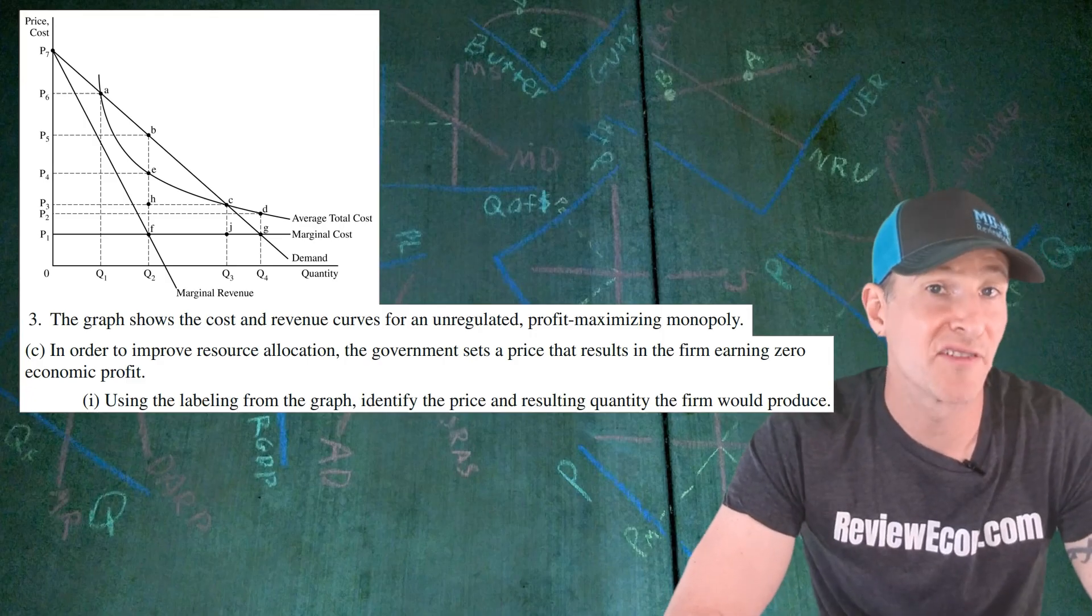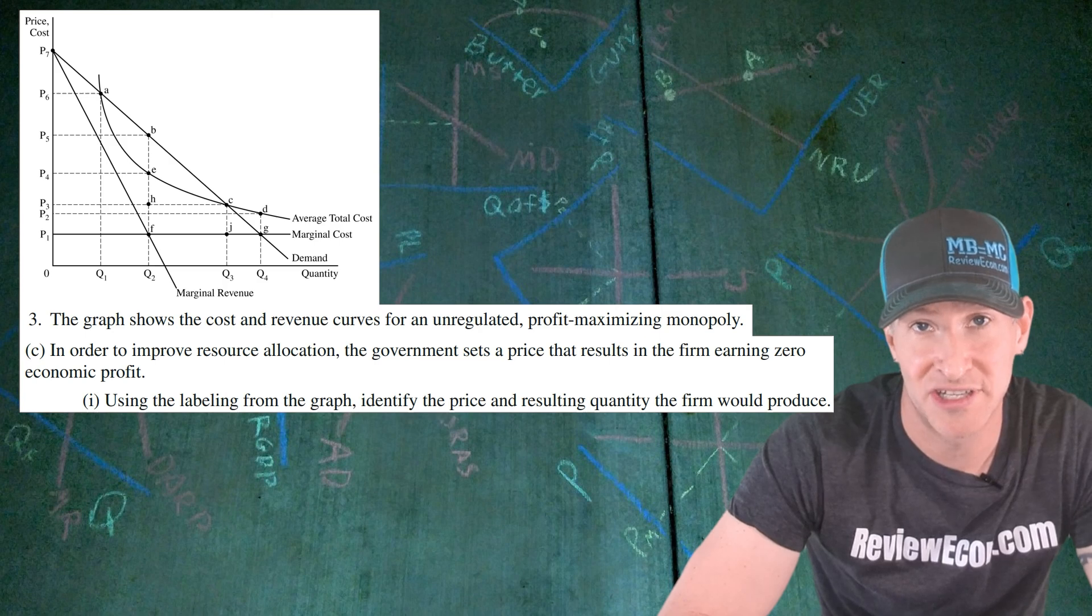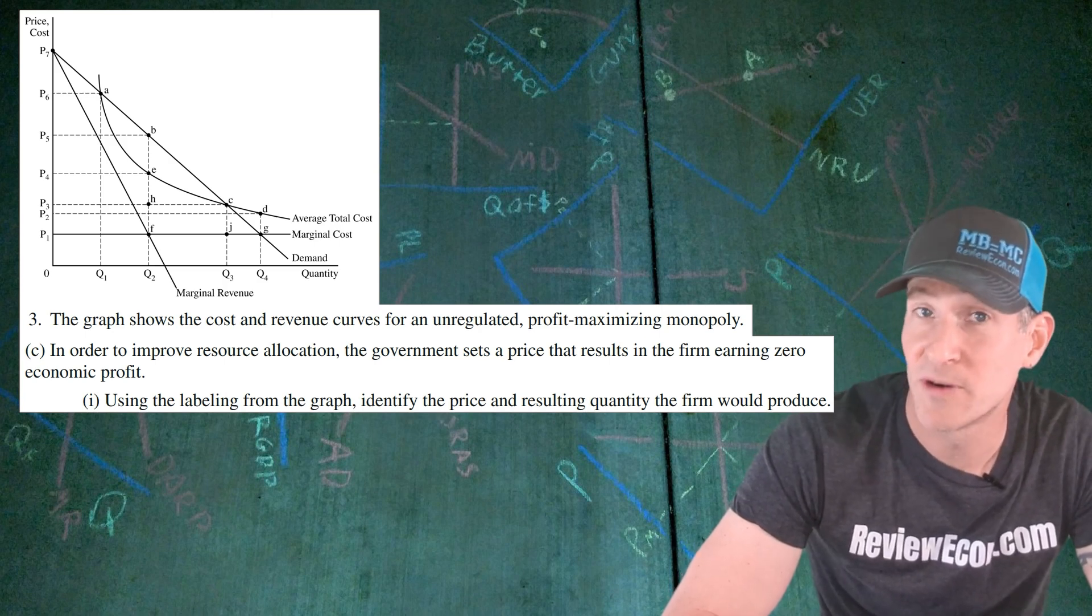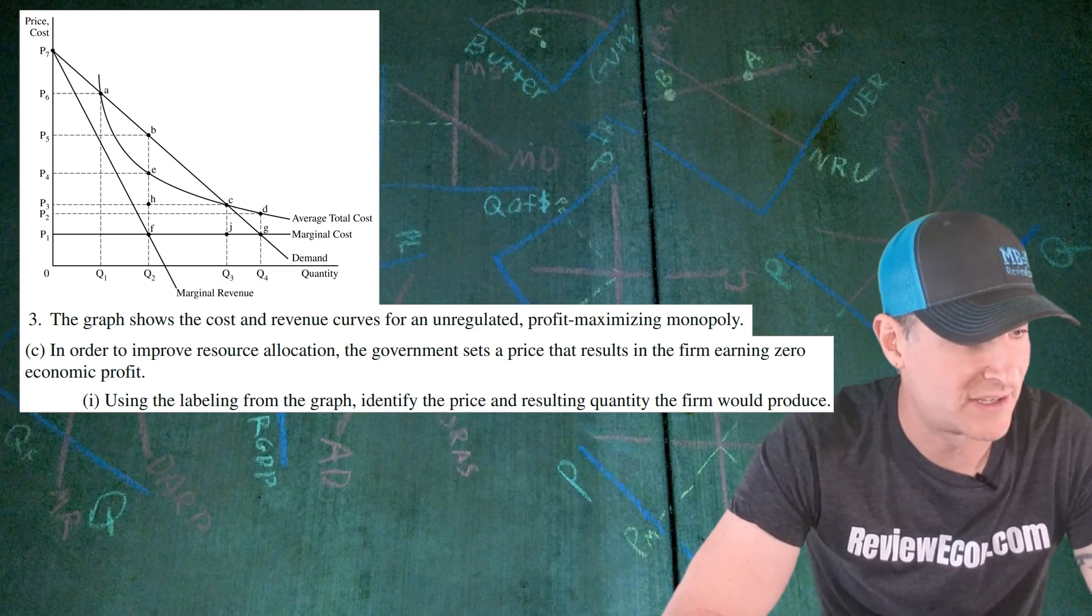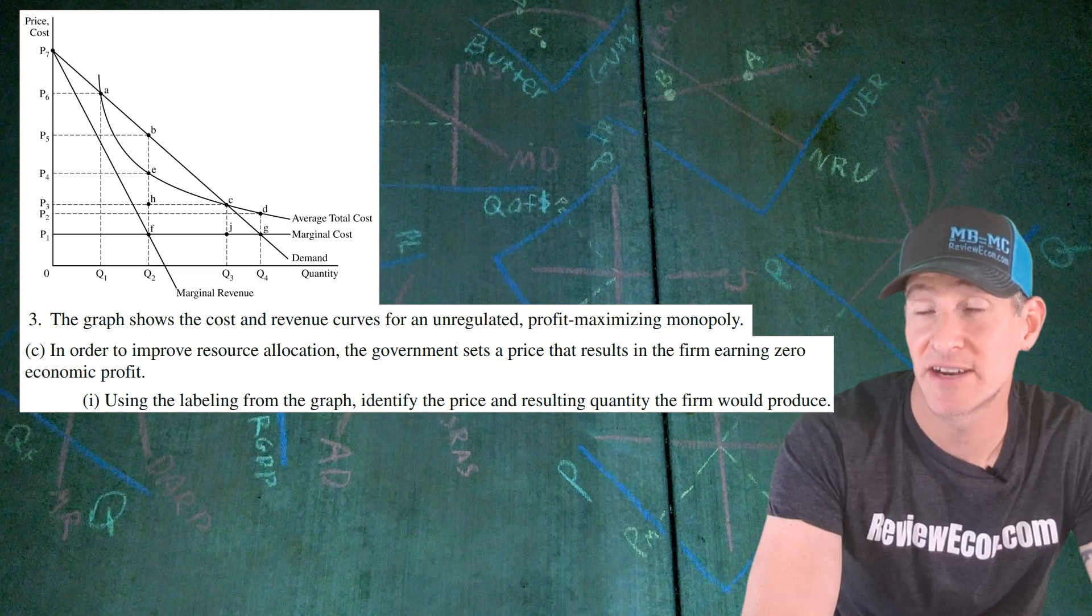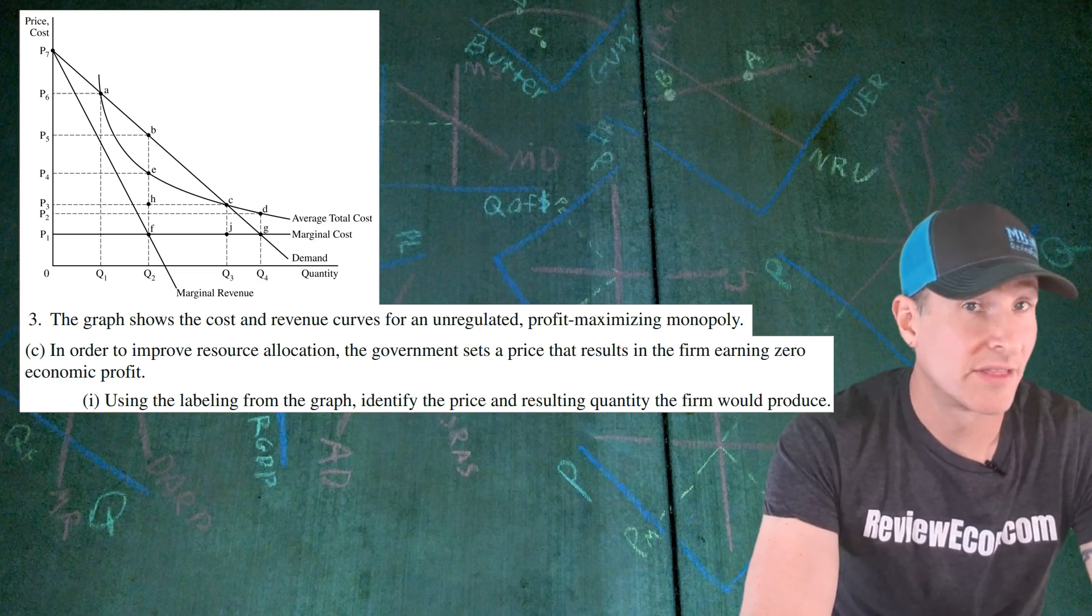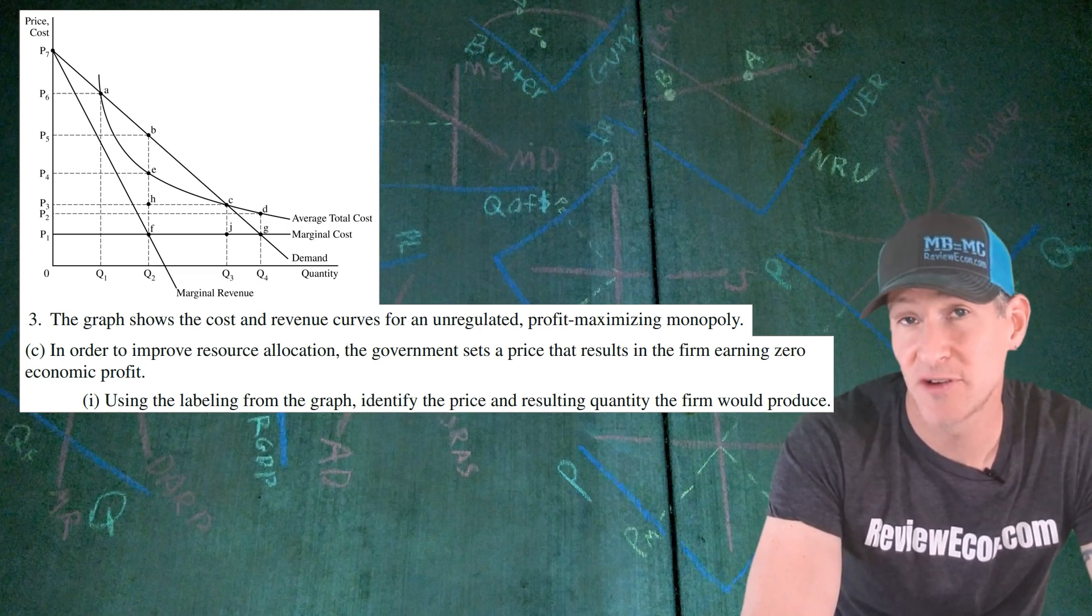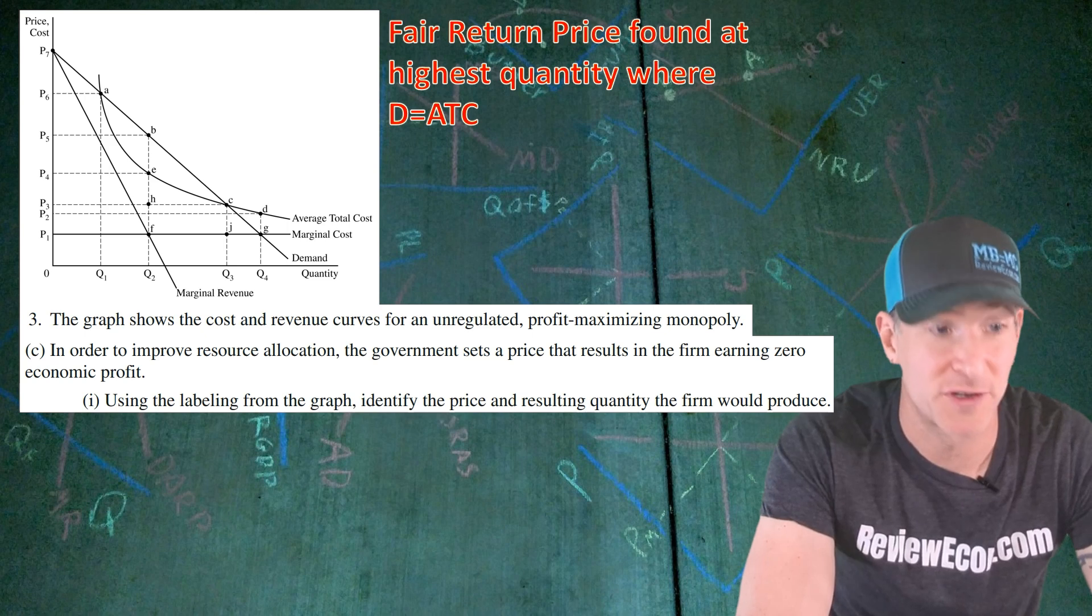For part C, we are told that the government is trying to improve resource allocation. They are going to set the price at a point where the firm is earning zero economic profit. We have to use the labeling on the graph to identify the price and quantity for the firm.